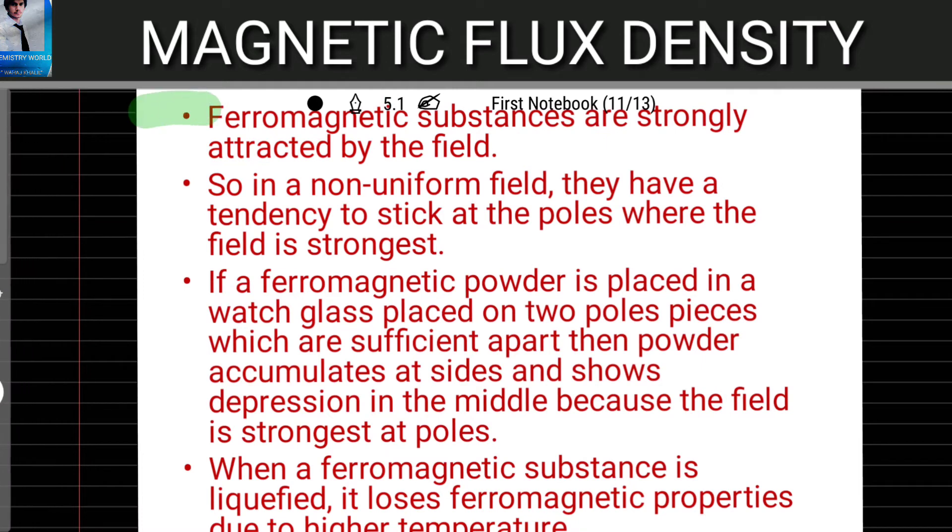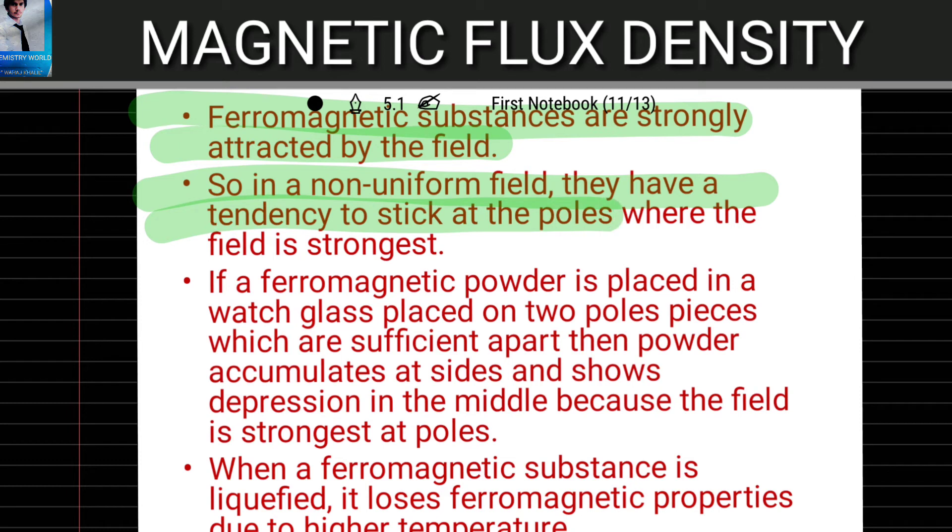Ferromagnetic substances are strongly attracted by the field. In a non-uniform field, they have a tendency to stick at the poles where the field is strongest.